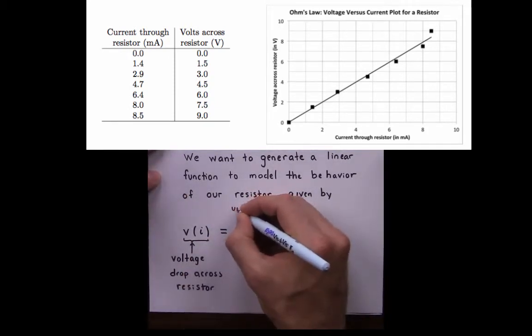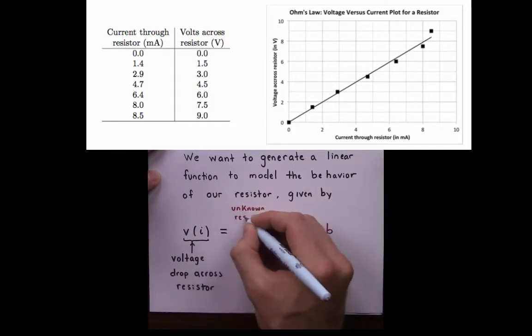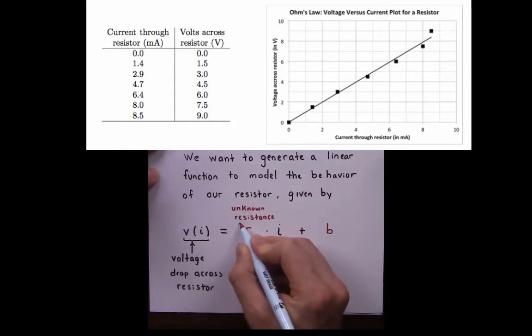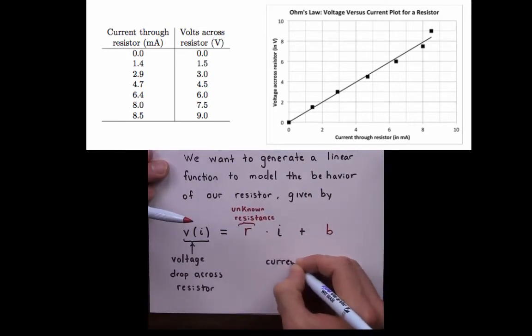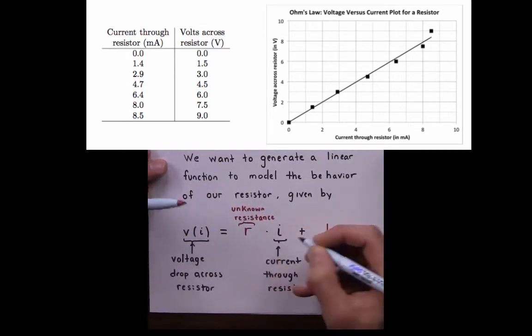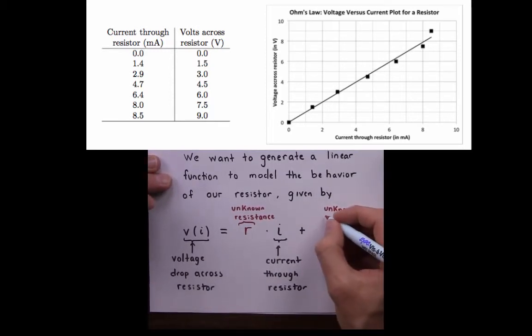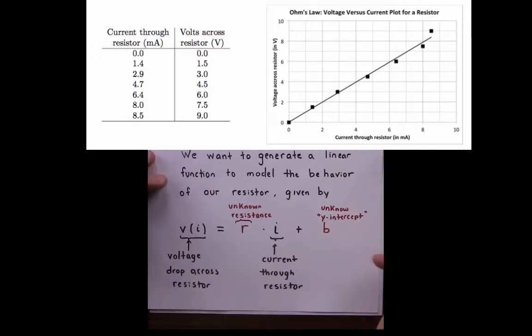The unknown value R represents the resistance measured in kiloohms in this problem. I represents the current running through the resistor. And B represents a possible y-intercept for this linear model. In this case, our output is called V, so it's really the V-intercept.